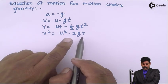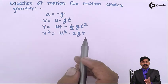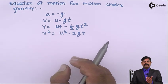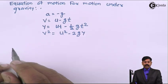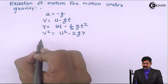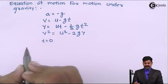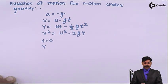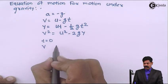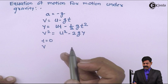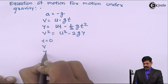Here, y is the y coordinate, that is the height above the origin at time t. u is the velocity in the y direction at t equals to 0. v is the velocity in the y direction at time t. The position of the particle at t equals to 0 is y equals to 0.